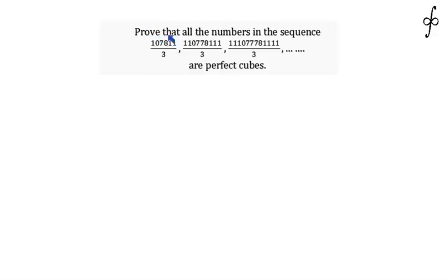The question asks us to prove that all numbers in the sequence are perfect cubes. Let's plan to write down the nth term of the sequence by following the pattern given. You can see that the first number has one '1', the second number has two '1's, then three '1's, and so on.